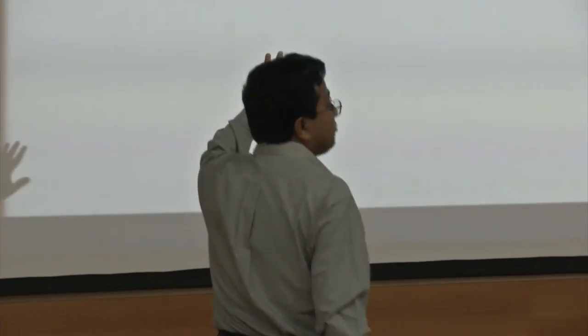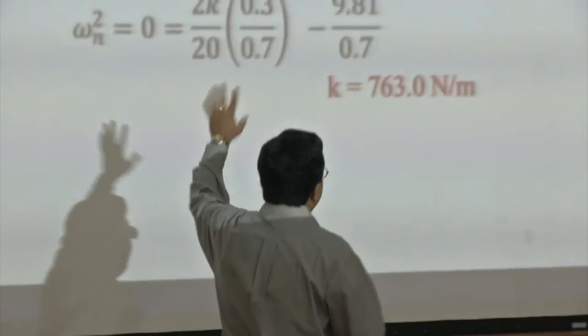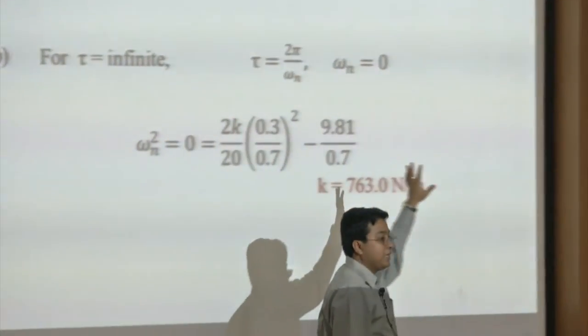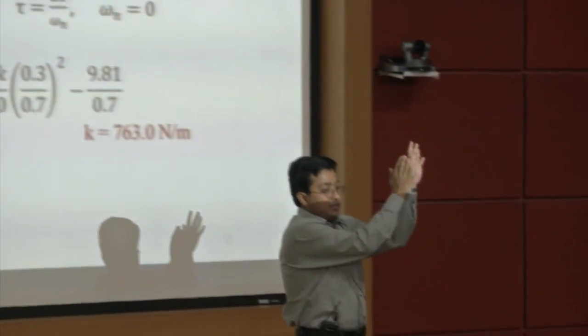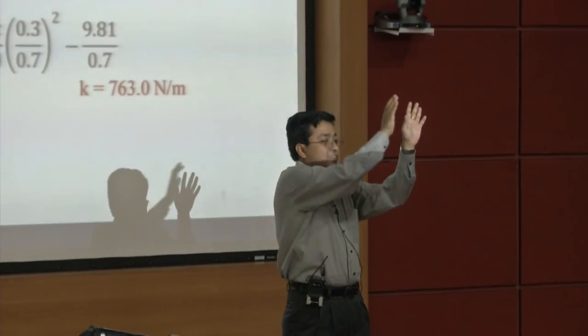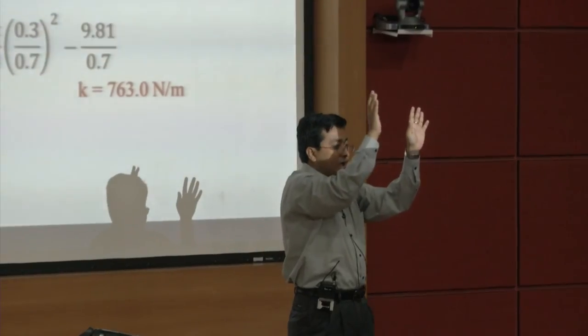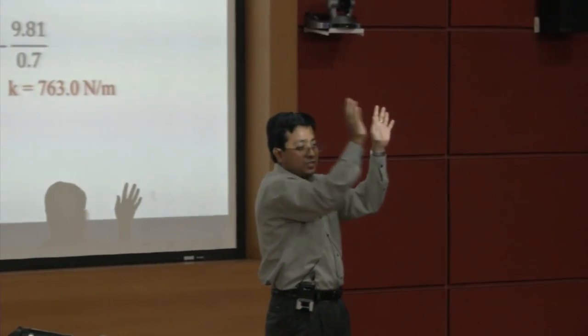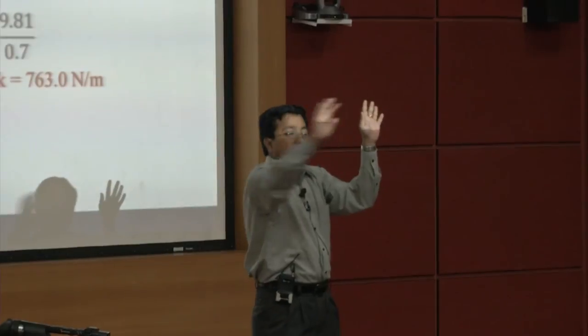In the first case the stiffness is high — it is a rigid stable system. T = infinity means it oscillates very slowly — actually it is not coming back. The system is unstable. We can calculate backward: if K is less than a certain value, the system is unstable.